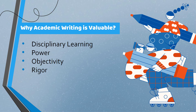Disciplinary learning: it is essential for disciplinary learning and can lead individuals to success in academic life. Power: expertise in academic writing gives a person control, power, and agency in knowledge. Objectivity: it teaches the value of impartiality — the writer needs to be unbiased while writing academic content. Rigor: it helps the person become meticulous in word choice and the logic of arguments, enabling them to present ideas rationally and logically.